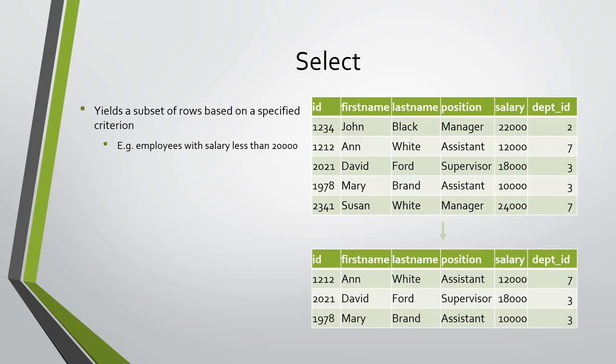The select operation yields as result a subset of the tuples based on a specified criterion. For example, selecting the employees having an annual salary less than 20 thousand produces three tuples out of the initial six.